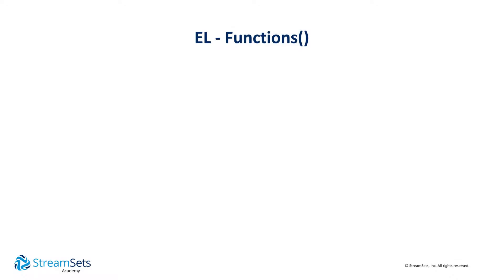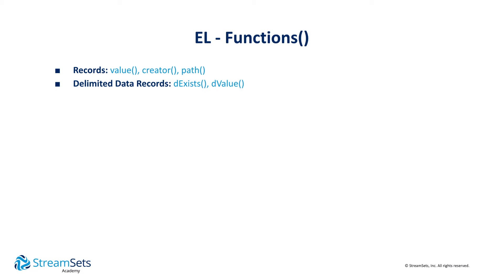In the expression language, or EL for short, there are several categories of functions. There are record functions, for example, to access values in a record. When working with a setting or configuration item throughout the platform, only those EL functions and elements that are relevant to that setting will be available.